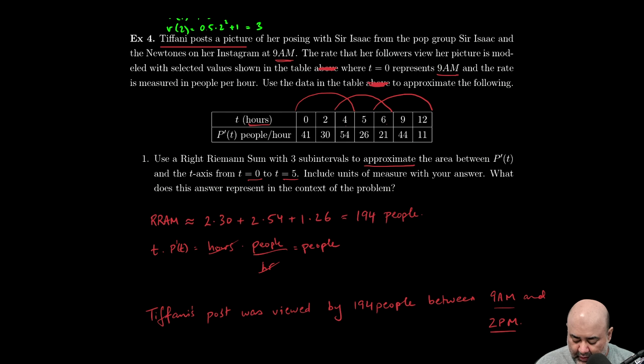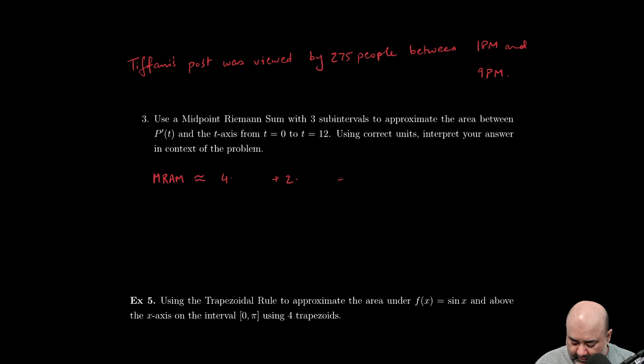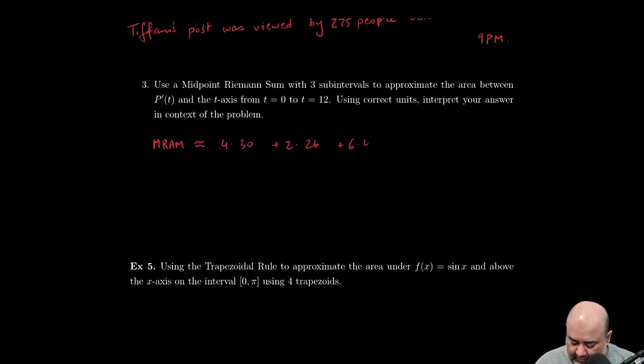The midpoint is what determines the height. Now I have to look at the width. The width from here to here is four. The width from here to here is four, five, six or two. The width from here to here is six. I'm just looking at the distance between the t values. So six to twelve is six, four to six is two, zero to four is four. Now for that width, the height is coming from the midpoint. So MRAM will be four, two, and six, and then the height will be 30, 26, and 44. And this is 436.